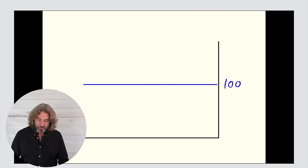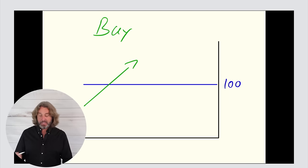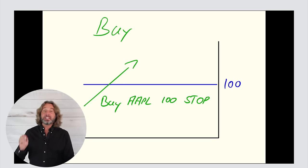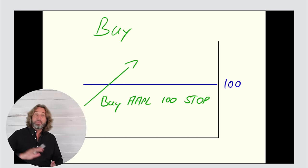Now let's say that we are betting on a market that is going up. This means that we want to buy a stock. If we want to buy a stock as soon as it crosses above 100, we would specify that we buy the stock, which could be for example Apple, at 100 stop. This means as soon as Apple moves above 100, buy it.